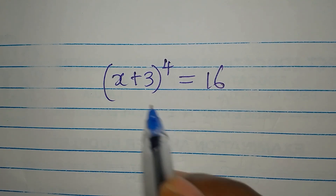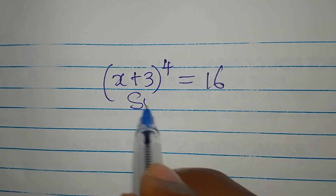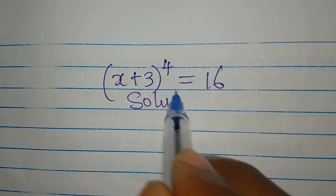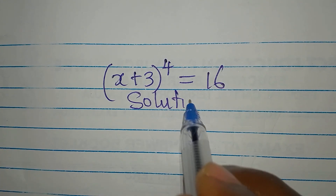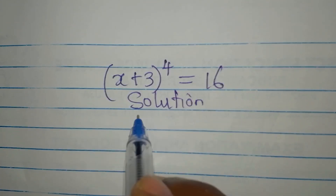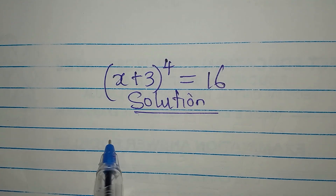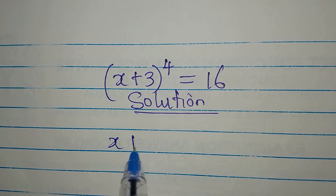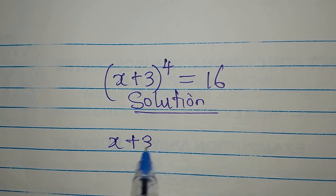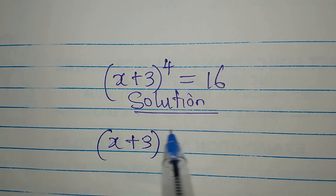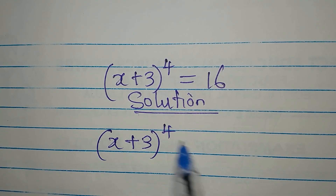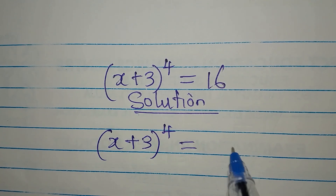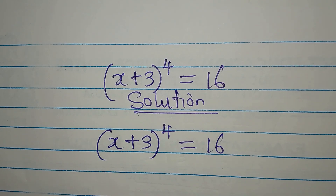Hi everyone. Let's provide the solution to this. We have (x + 3) to the power of 4 equals 16.